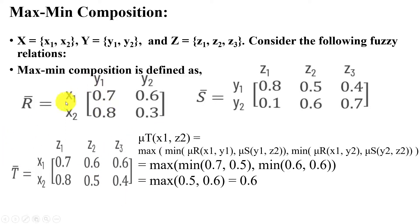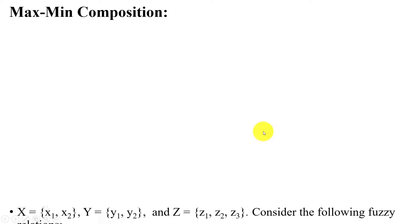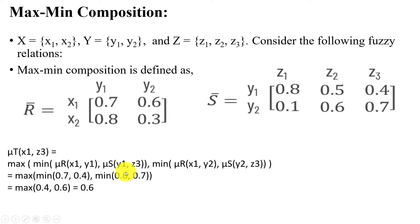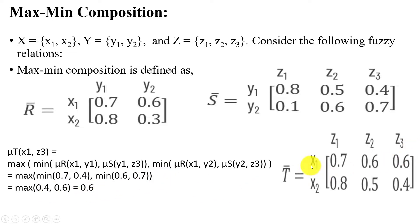Similarly, for the first row and third column: T(x1,z3). We have min(R(x1,y1), S(y1,z3)) = min(0.7, 0.4) = 0.4, and min(R(x1,y2), S(y2,z3)) = min(0.6, 0.7) = 0.6. The maximum of {0.4, 0.6} is 0.6. Therefore T(x1,z3) = 0.6, entered into the matrix.